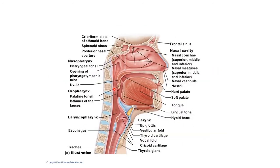The nasopharynx lies behind the nasal cavities and the soft palate. The roof is formed by the body of the sphenoid and the basilar part of the occipital bone. Its floor is formed by the soft palate, the upper sloping surface of the soft palate, and the pharyngeal isthmus. The pharyngeal isthmus is an opening in the floor of the nasopharynx between the free edge of the soft palate and the pharyngeal wall. The anterior wall is formed by the posterior nasal aperture separated by the posterior edge of the nasal septum. The posterior wall forms a continuous sloping surface with the roof and is separated by the arch of C1 vertebra. The lateral wall has the opening of the auditory tube, which is surrounded by lymphoid tissue called the tubal tonsil.